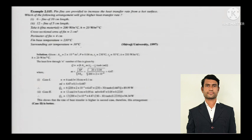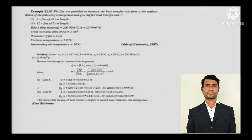The next problem: pin fins are provided to increase heat transfer rate from a hot surface. Which arrangement gives higher heat transfer — 6 fins of 10 cm length, or 12 fins of 5 cm length? Fin thermal conductivity K = 200 W/m°C, H = 20 W/m²°C, cross-sectional area = 2 cm², perimeter = 4 cm, fin base temperature = 230°C, surrounding air T_A = 30°C.